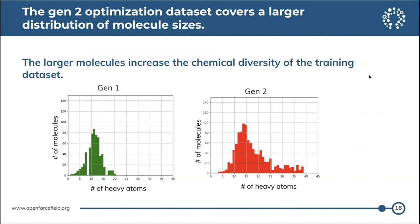Looking at the distribution of heavy atoms for the generation 1 and generation 2 data sets, we can see that the gen 2 optimization data set covers a much larger distribution of molecule sizes, which is really great for improving chemical diversity. In gen 1, the heavy atom count was mostly between 10 and 15, but in gen 2 we were able to get coverage of molecules with almost up to 40 heavy atoms, allowing for a lot more intermixing of different chemistries in our fitting.